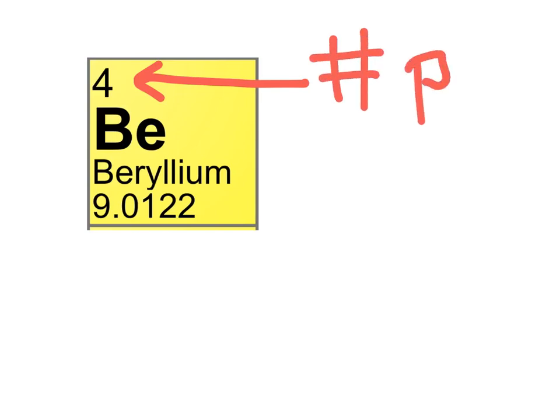Any atom with this many protons has to be this element. If we see four protons, we know it has to be beryllium, and if we see beryllium we know it has to have four protons.